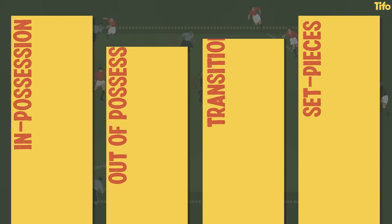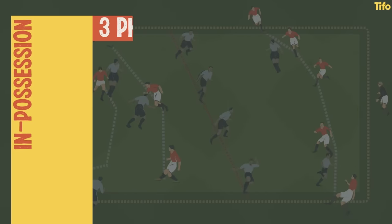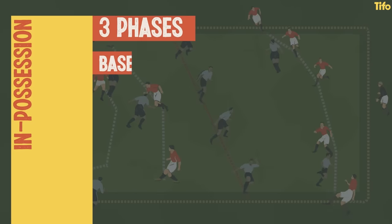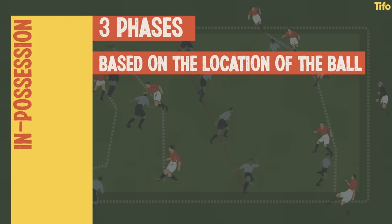The four main ones are in possession, out of possession, transitions and set pieces, with each one having its own subcategories. For instance, when a side is in possession, the three phases are generally based on the location of the ball.